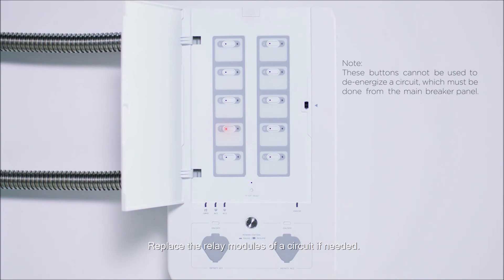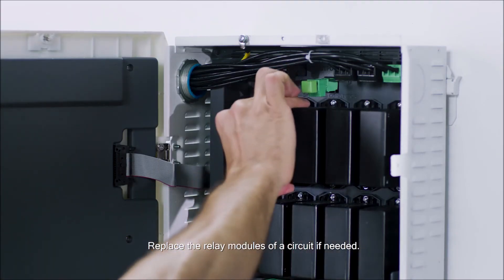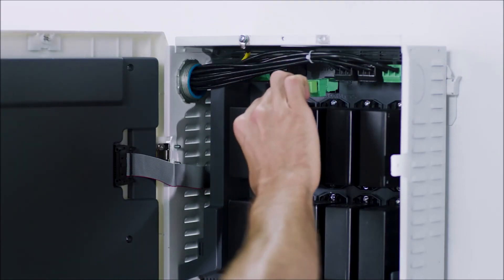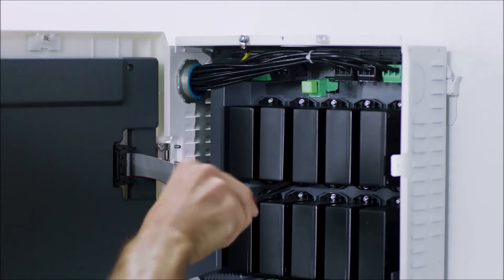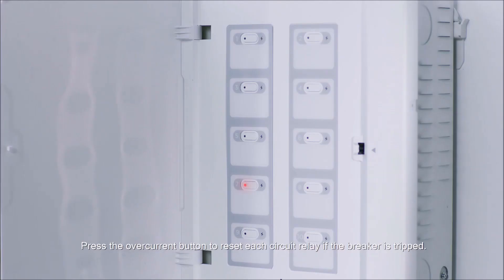Replace the relay modules of a circuit if needed. Press the over current button to reset each circuit relay if the breaker is tripped.